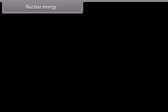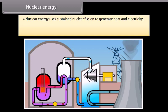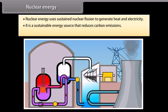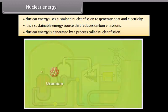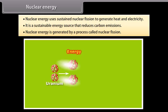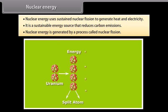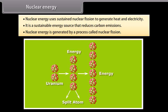Nuclear energy. Nuclear energy uses sustained nuclear fission to generate heat and electricity. It is a sustainable energy source that reduces carbon emissions. In nuclear fission, the nucleus of heavy uranium, plutonium, or thorium is bombarded with low energy neutrons. This atom is then split into lighter nuclei, releasing a tremendous amount of energy. For example, the fission of one atom of uranium produces 10 million times the energy produced by the combustion of one atom of carbon from coal.